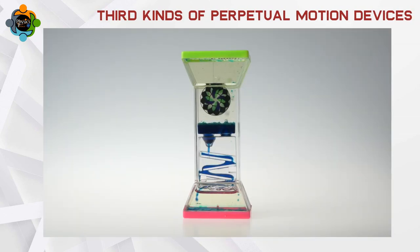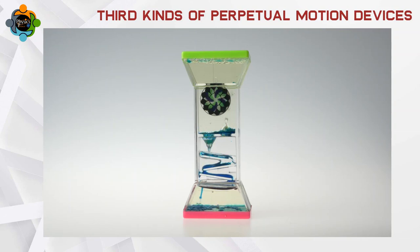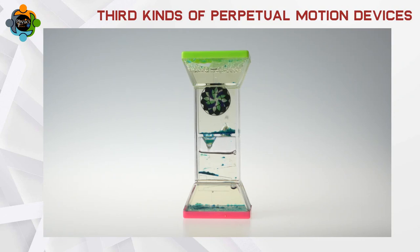A perpetual motion machine of the third kind is defined as one that completely eliminates friction and other dissipative forces to maintain motion forever due to its mass inertia. It is impossible to make such a machine, as dissipation can never be completely eliminated in a mechanical system, no matter how close a system gets to this ideal.